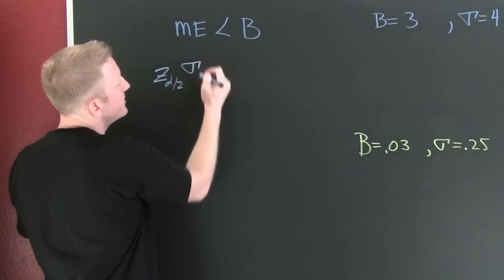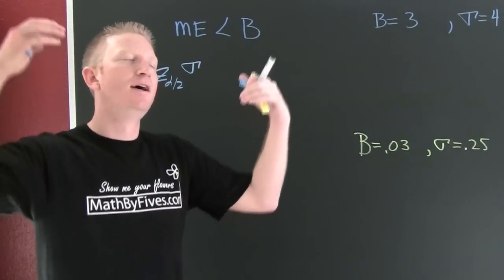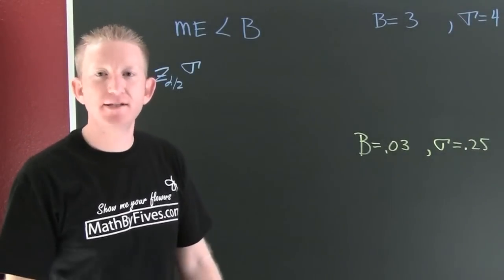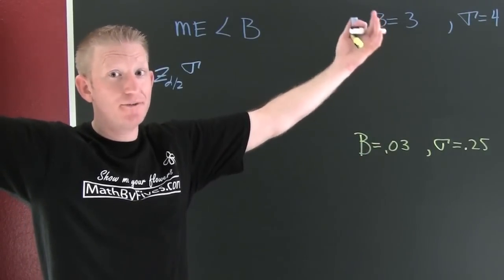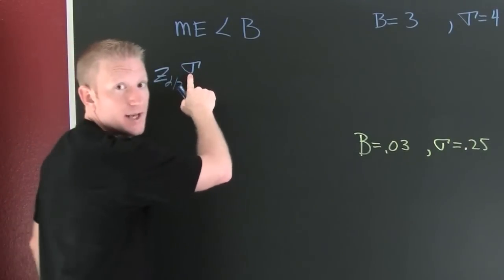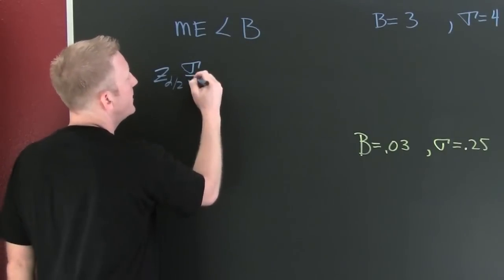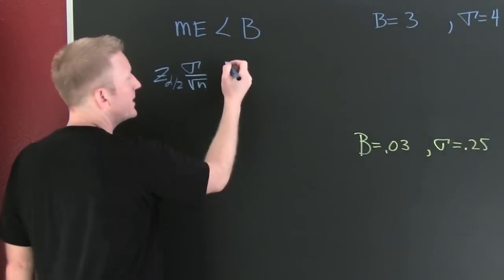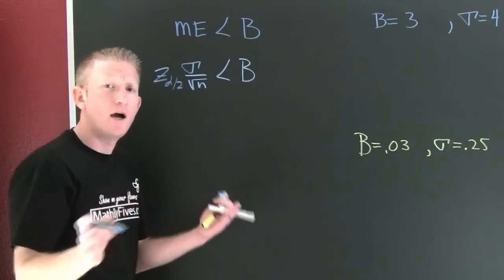That's my notation for standard deviation because I can't make sigmas. Sometimes you gotta throw your hands up in the air and let go. So then this is my standard deviation in my notation for the standard deviation of a population, divided by the square root of n. I'm trying to get that to be smaller than some bounds.